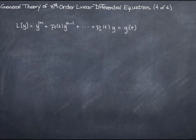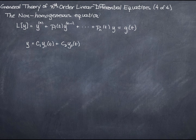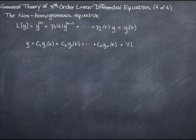But in the event that it's not 0, we call this the non-homogeneous equation. And as with the second order case, we say that y equals some linear combination of the individual solutions y1 of t, y2 of t, and so on, all the way up to yn of t. That linear combination would be a solution to the homogeneous case. But this is the non-homogeneous case, so we need to add on that particular solution, y of t.